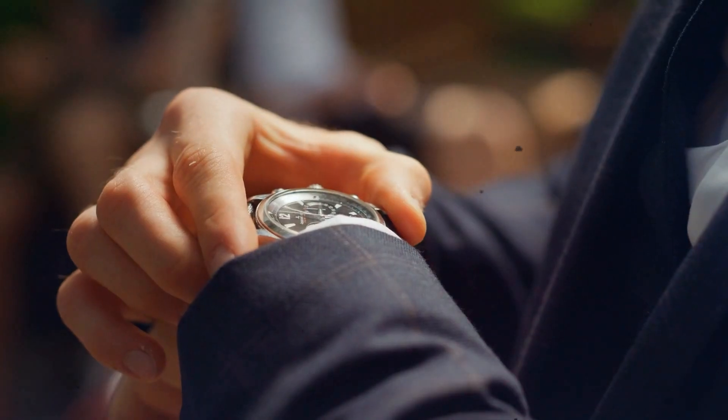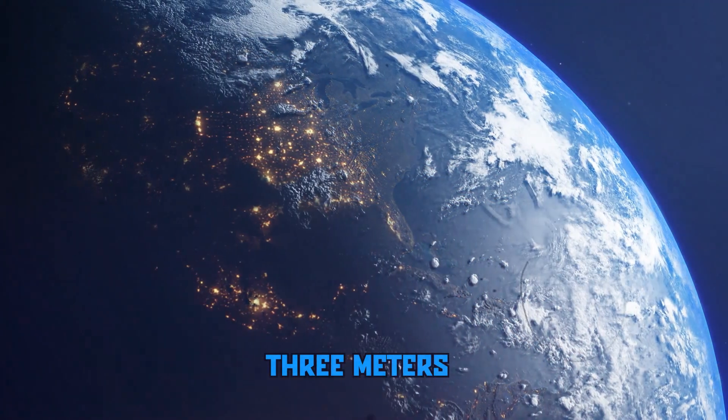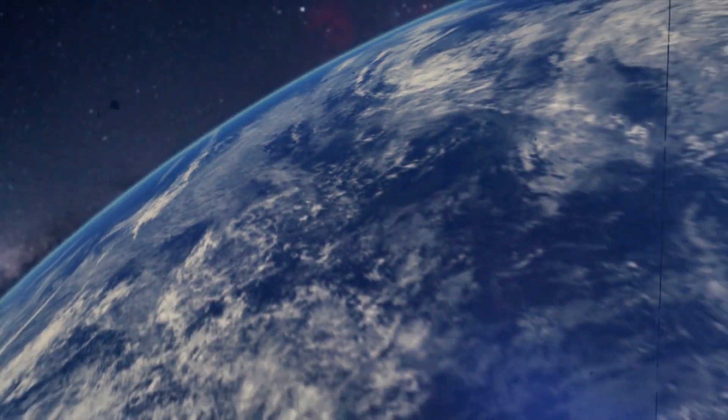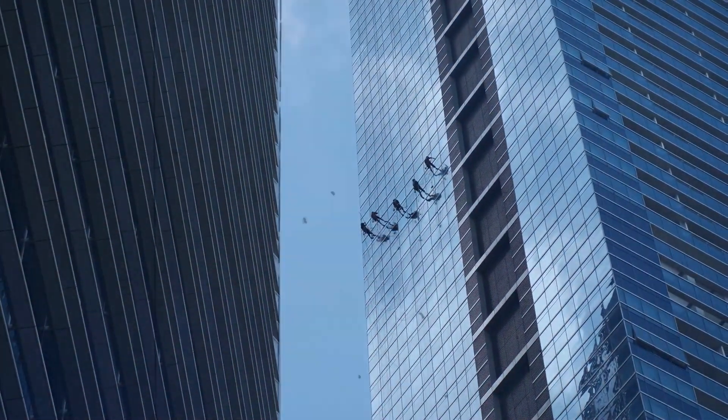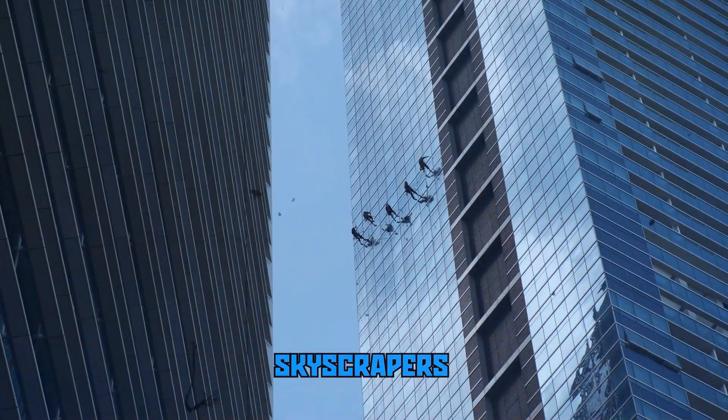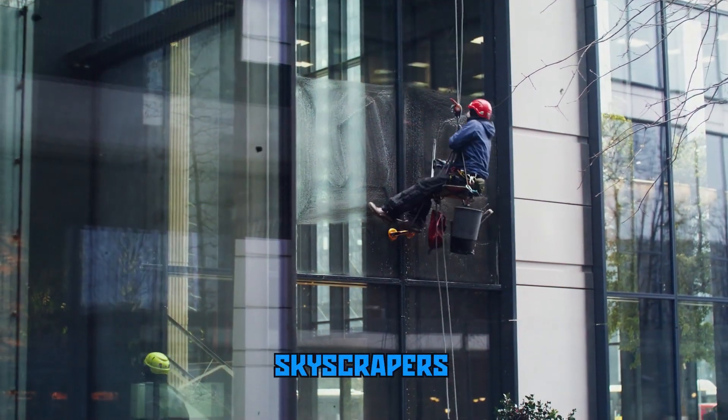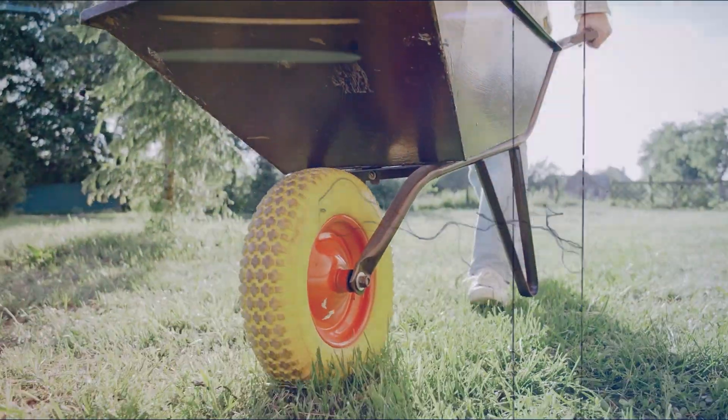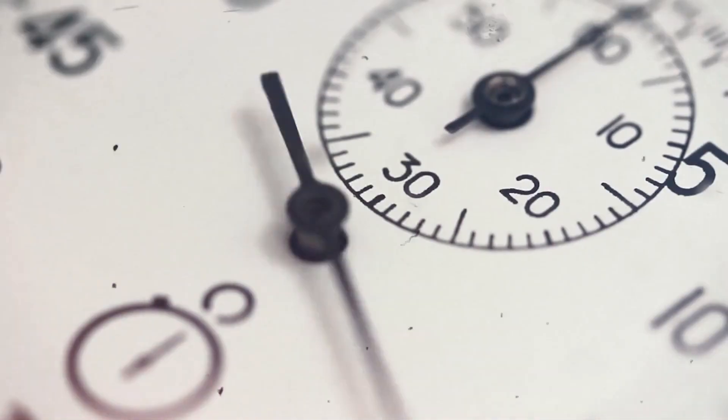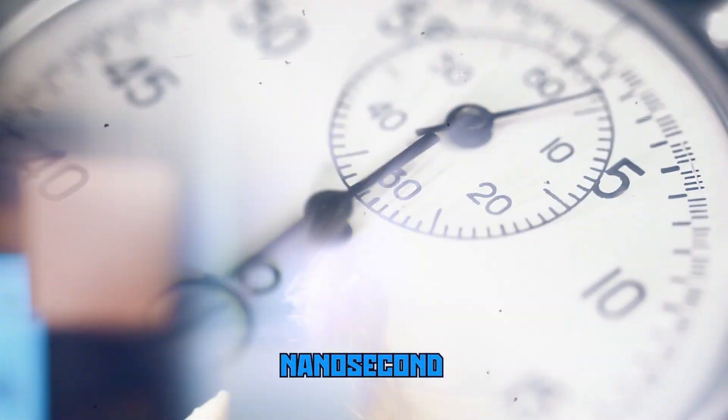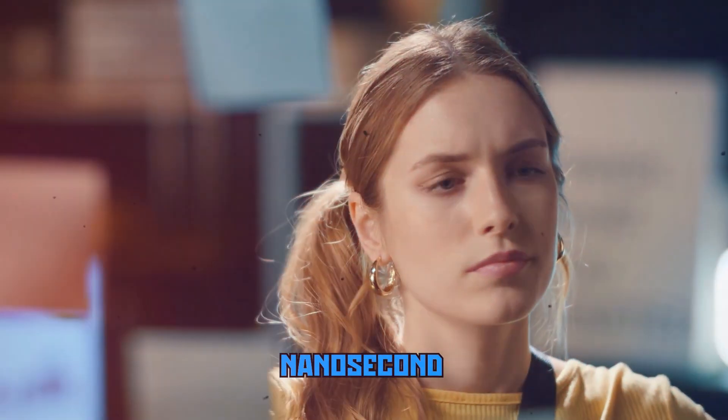For example, the difference in time between being three meters above the Earth's surface and four meters above can be detected. In everyday life, people working on higher floors of skyscrapers or living at higher altitudes experience time moving just a bit faster compared to those at lower levels. Over a year, this difference is only fractions of a nanosecond, a very small change, but it can have an impact in some contexts.